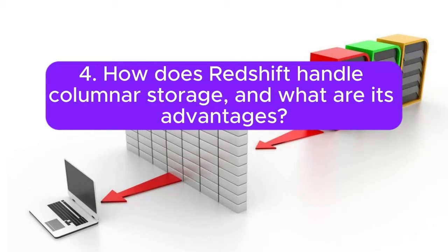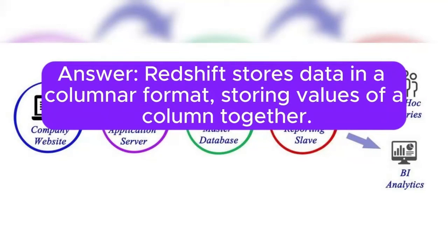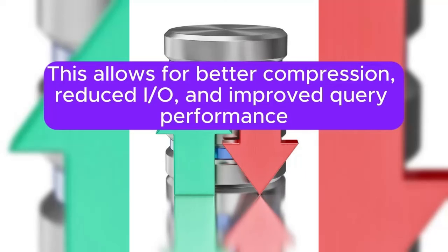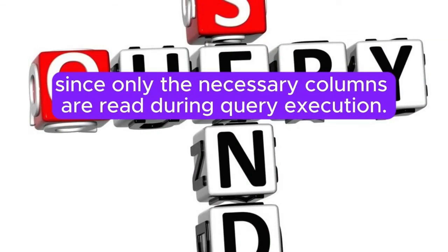Question 4: How does Redshift handle columnar storage, and what are its advantages? Answer: Redshift stores data in a columnar format, storing values of a column together. This allows for better compression, reduced I/O, and improved query performance, since only the necessary columns are read during query execution.